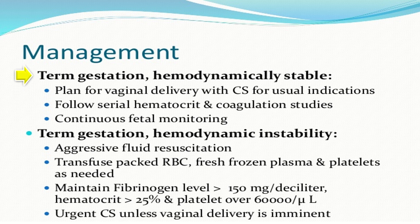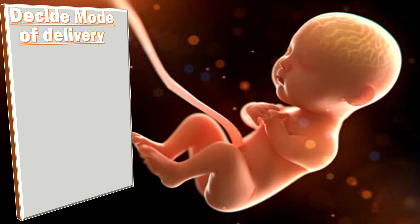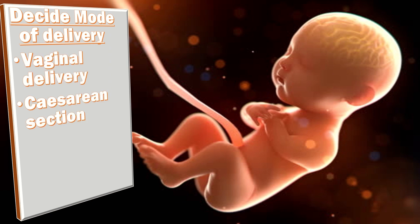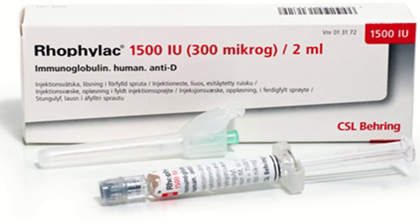For management in term gestation and a hemodynamically stable state, plan for vaginal delivery with cesarean section for obstetric indications along with continuous fetal monitoring. In term gestation with a hemodynamically unstable case, go for resuscitation along with emergency cesarean section unless vaginal delivery is imminent. In preterm gestation and a hemodynamically stable case, do conservative management. In preterm gestation and a hemodynamically unstable state, go for immediate delivery and resuscitation. Decide the appropriate mode of delivery — vaginal delivery is preferable, but cesarean section is indicated if there is maternal and fetal compromise. Immediate delivery is indicated when DIC sets in or the patient becomes unstable, and consent should be taken for hysterectomy in case of bleeding. Anti-D immunoglobulin should be given to all Rh-negative mothers after presentation with antepartum hemorrhage.